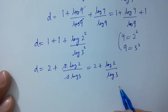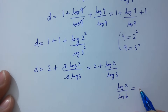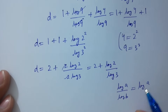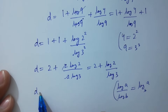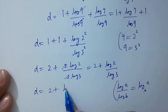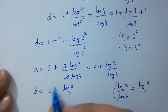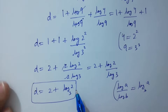As log A over log B equals log A to the base B, d equals 2 plus log 2 to the base 3. This is the value of d.